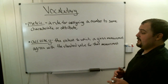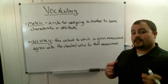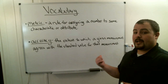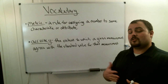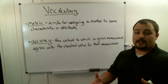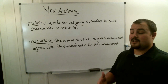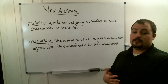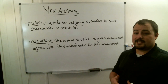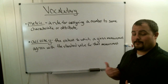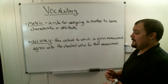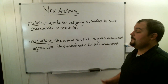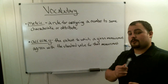Accuracy is the extent to which a given measurement agrees with the standard value for that measurement. The closer we get to that standard, the more accurate it is; the less close we get, the less accurate. Sometimes the best measurement is not the most precise but uses the biggest unit — like measuring miles from here to Florida rather than feet. Miles is a bigger unit more appropriate for that type of distance. So accuracy and metric are what we're covering today.